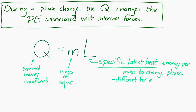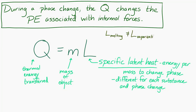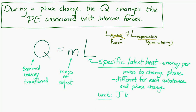Specific latent heat is different for every substance and for every phase change. For water, the specific latent heat of melting is different from the specific latent heat of vaporization. They don't actually call it the specific latent heat of melting — they use the older term 'specific latent heat of fusion,' though we're not talking about nuclear fusion here, just melting. The unit of specific latent heat is joules per kilogram.